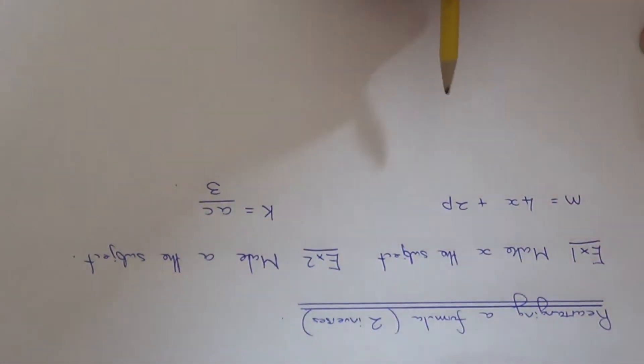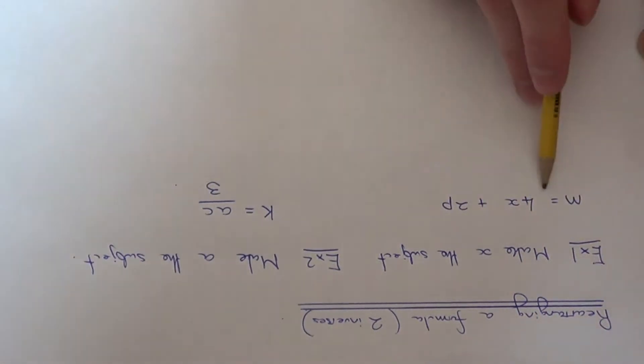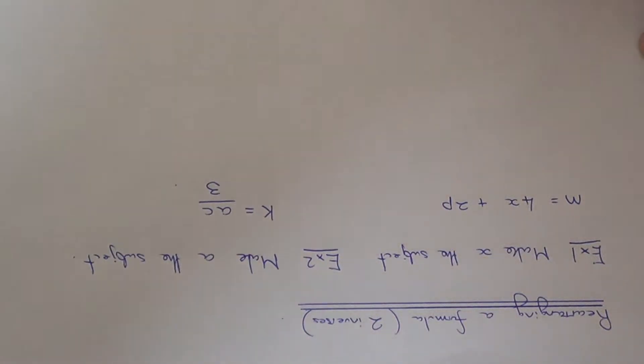So let's have a look at example one. This time we need to make x the subject of the formula m equals 4x plus 2p. What we're trying to do is get a formula for x, so we have a formula which says x equals something.